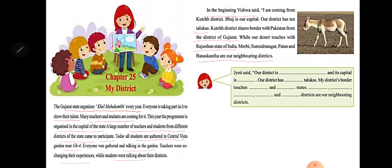The teacher explained: Kutch border touches with three things — a state (Rajasthan), a country (Pakistan), and neighboring districts (Morbi, Surendranagar, Patan, and Banaskantha). Kutch is the only district of Gujarat whose border touches with both a state and a foreign country.